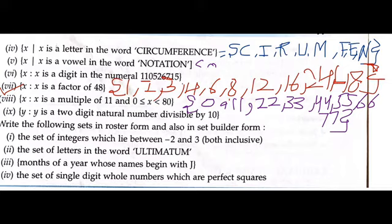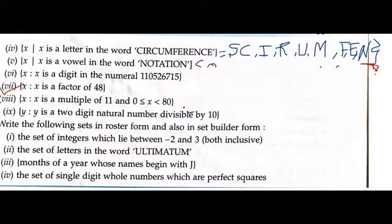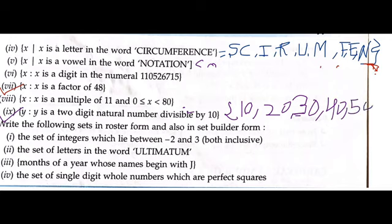Now question number 9: y where y is a two-digit natural number divisible by 10. Two-digit natural numbers divisible by 10: curly bracket, 10, 20, 30, 40, 50, which are also two digits, 60, 70, 80, and 90. After 90, if we take 110, it would be...